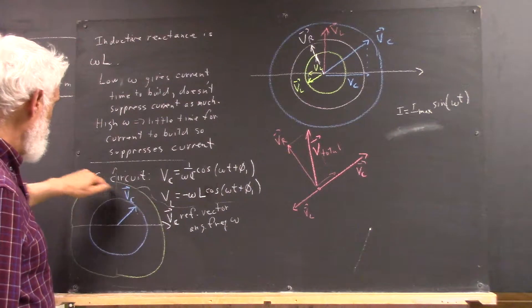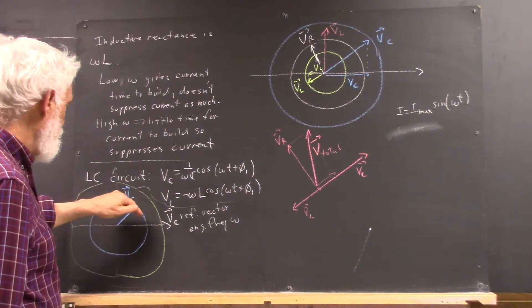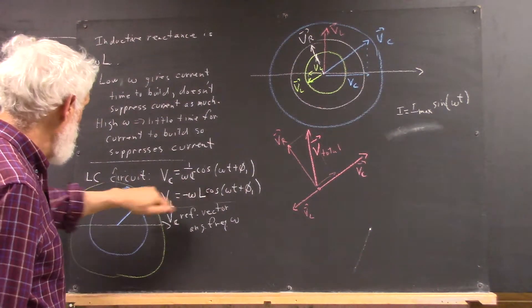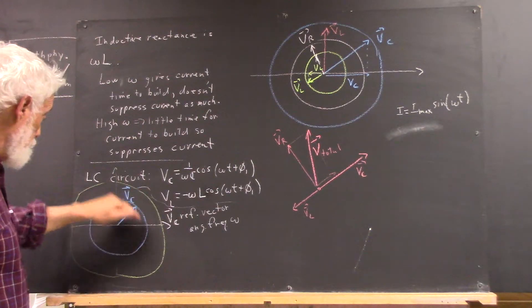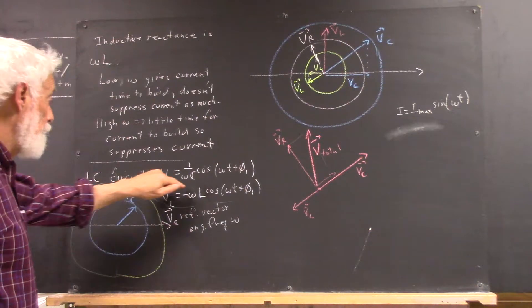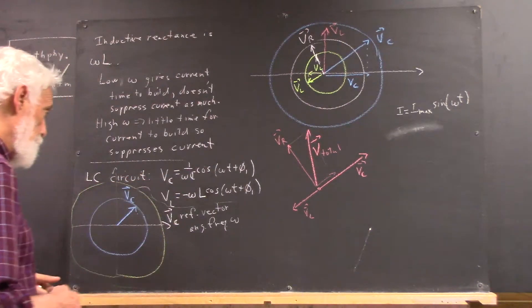Now, I've drawn it so that 1 over omega C is smaller than omega L. I'm going to use the green circle for omega L, it's not a very good circle. I'm going to use this circle for the capacitor voltage, we'll see how that works out.